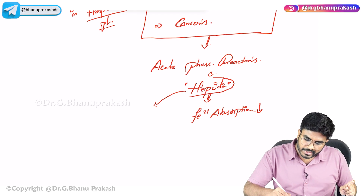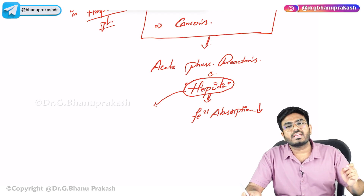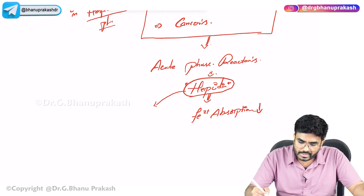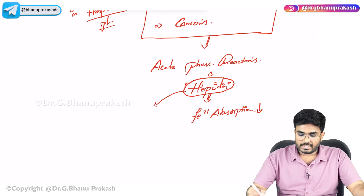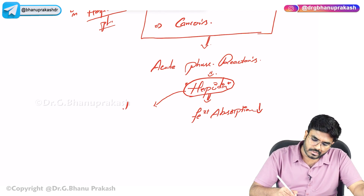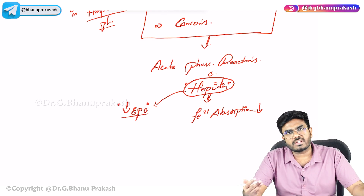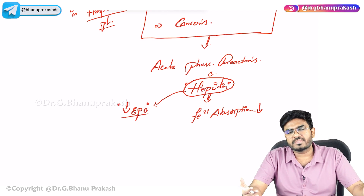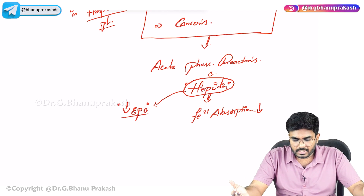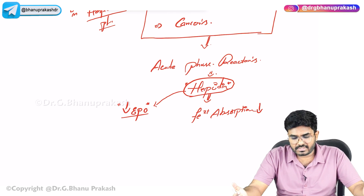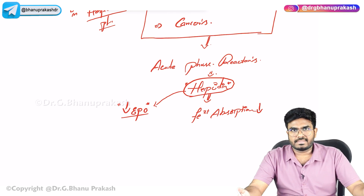The main culprit is hepcidin. Hepcidin also decreases erythropoietin production. Since erythropoietin helps in RBC production and hematopoiesis, without sufficient erythropoietin, hematopoiesis decreases.